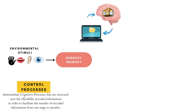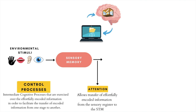According to this model, it is crucial to pay active attention to the information in the sensory memory register for it to proceed to the next storage unit, which is the short-term memory. Attention is the first control process introduced in the multi-store model, and its chief function is to facilitate the transfer of encoded information from the sensory stage to the STM. Any encoded information in sensory memory that is not subjected to active attention is often lost and does not transfer to the STM.